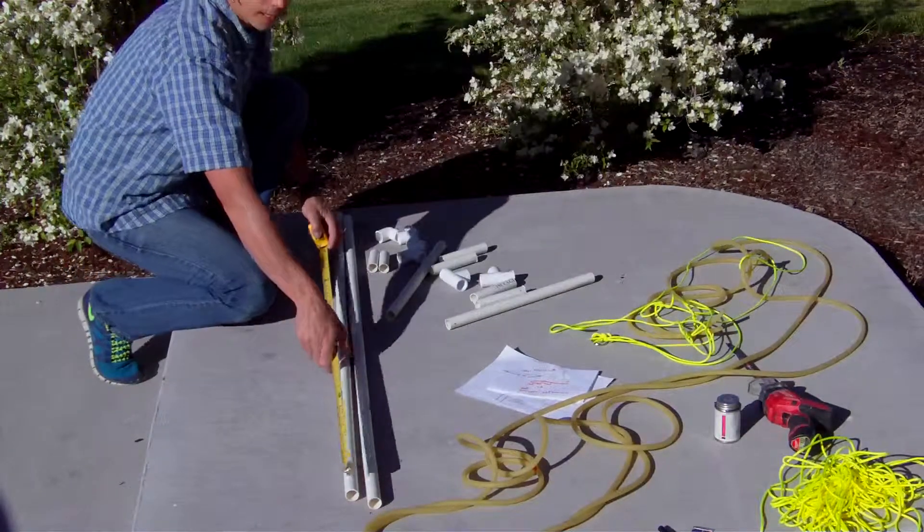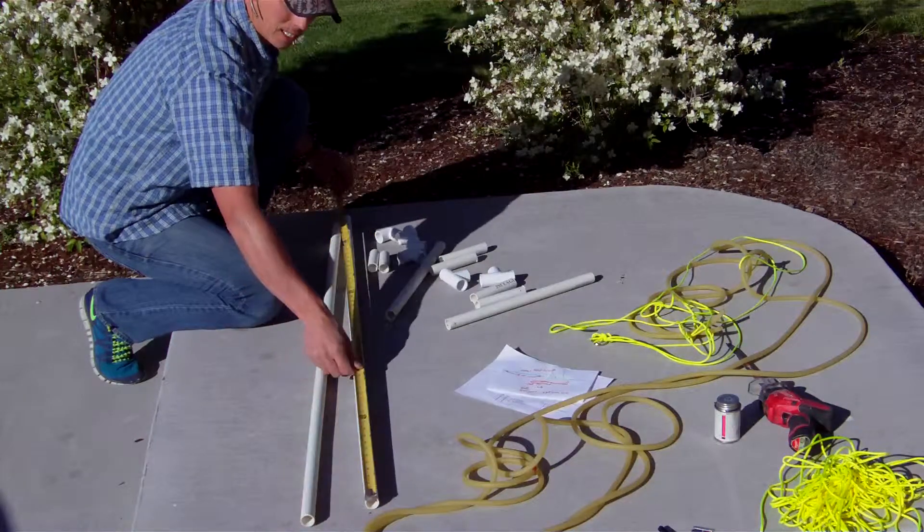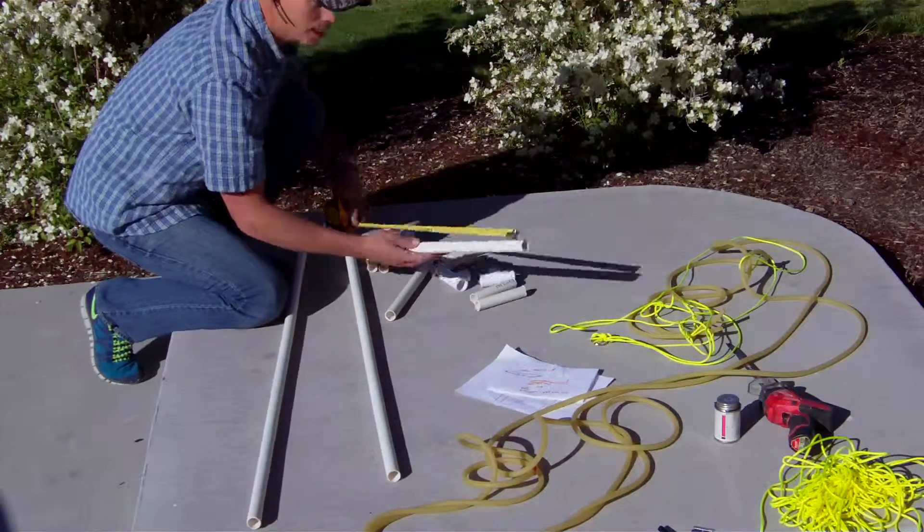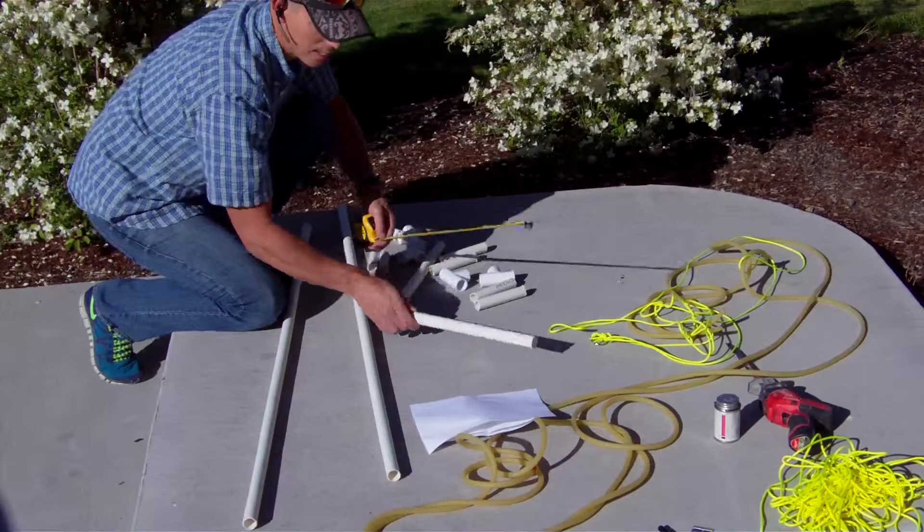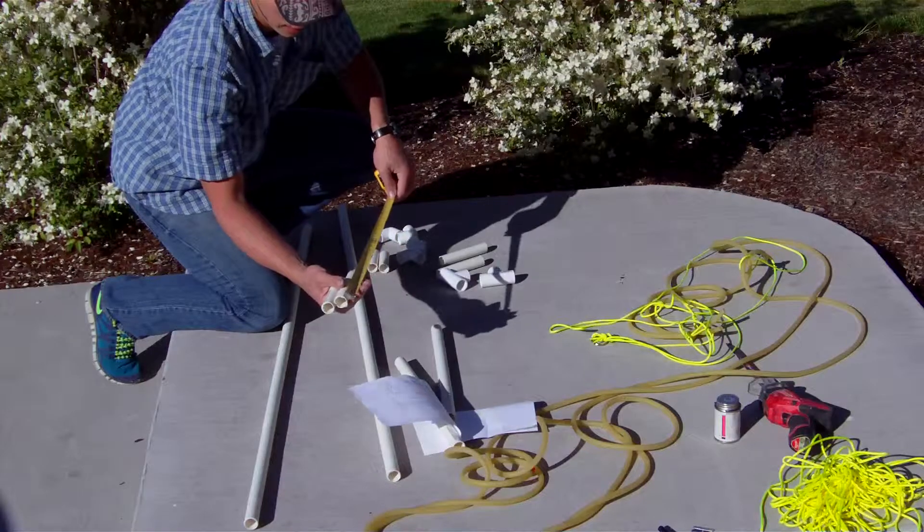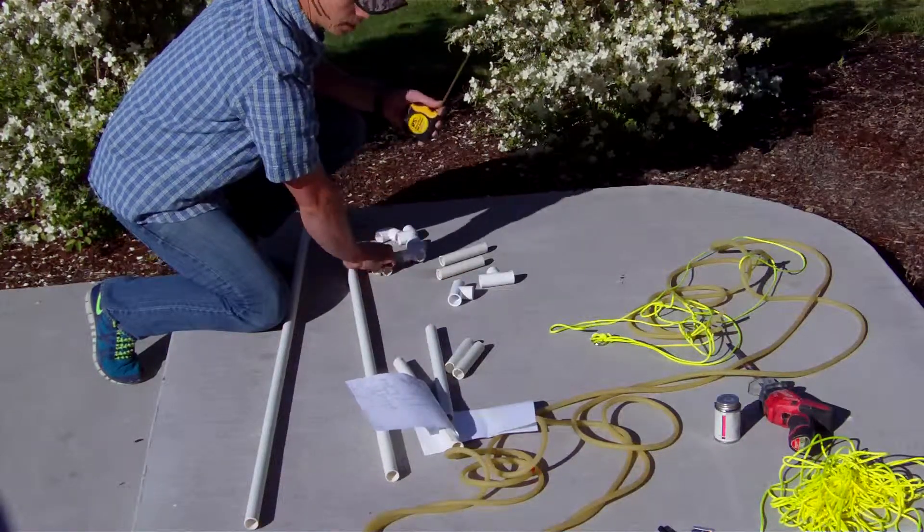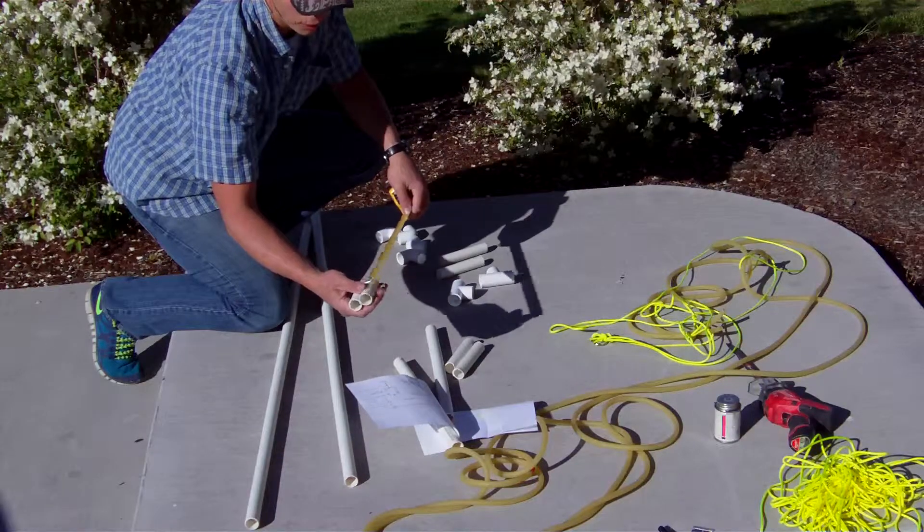We've got two pieces of conduit cut. I've got them at 57 inches. I've got two pieces cut at 17 inches. I've got four pieces cut at 5 inches. And I've got two for the back legs cut at 3 inches.